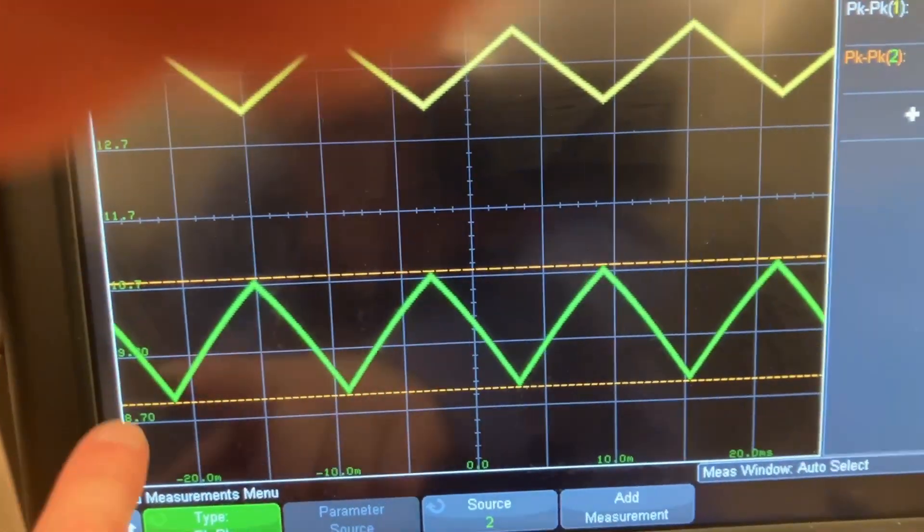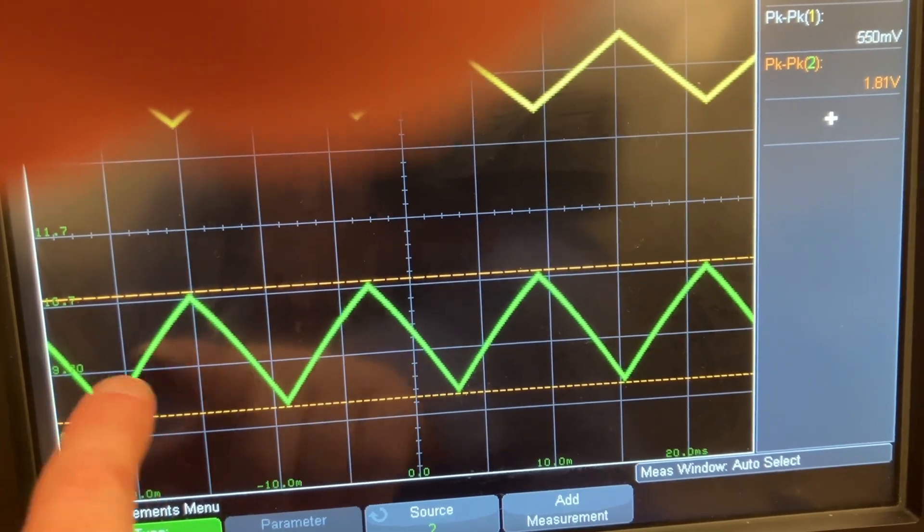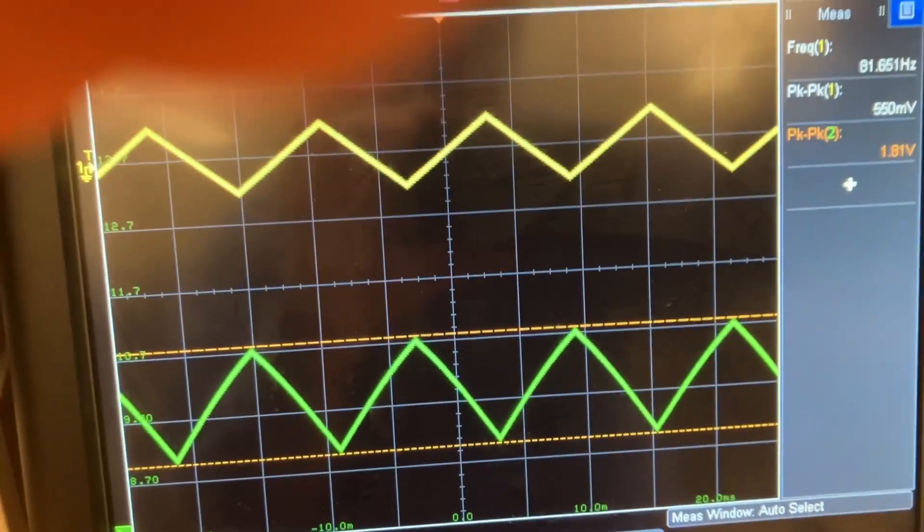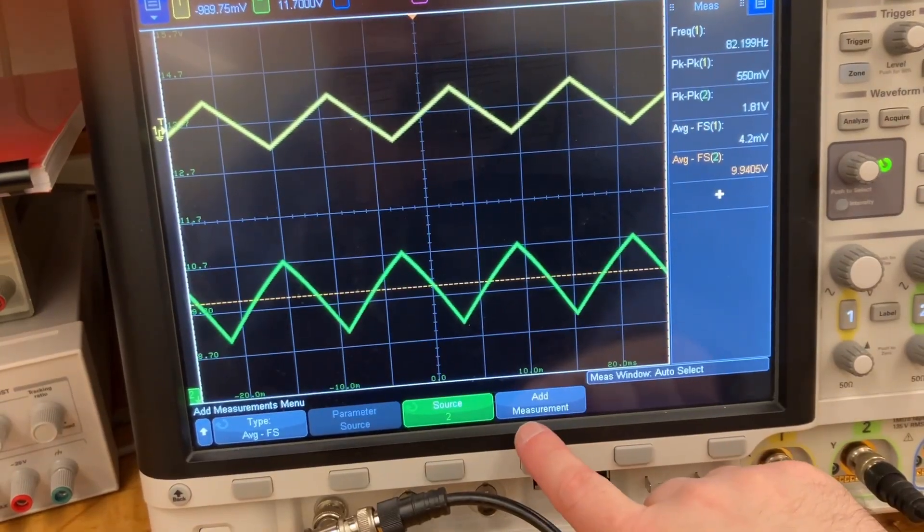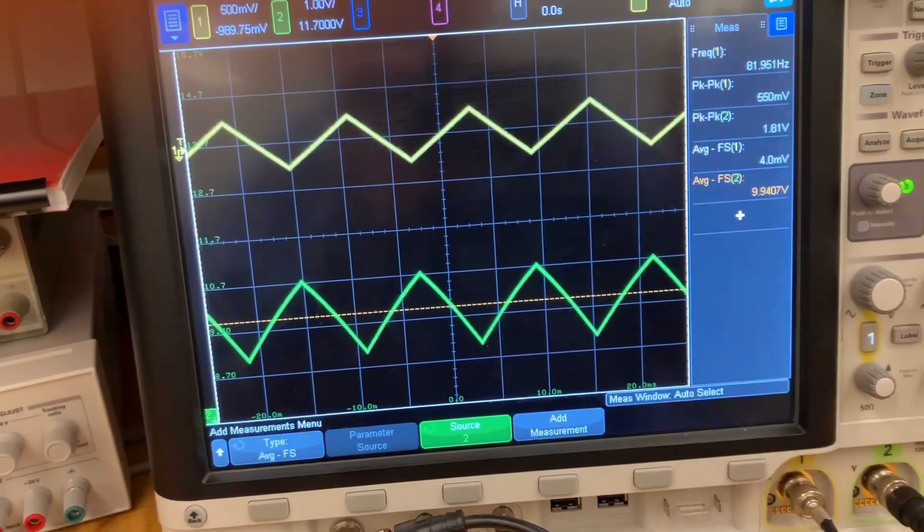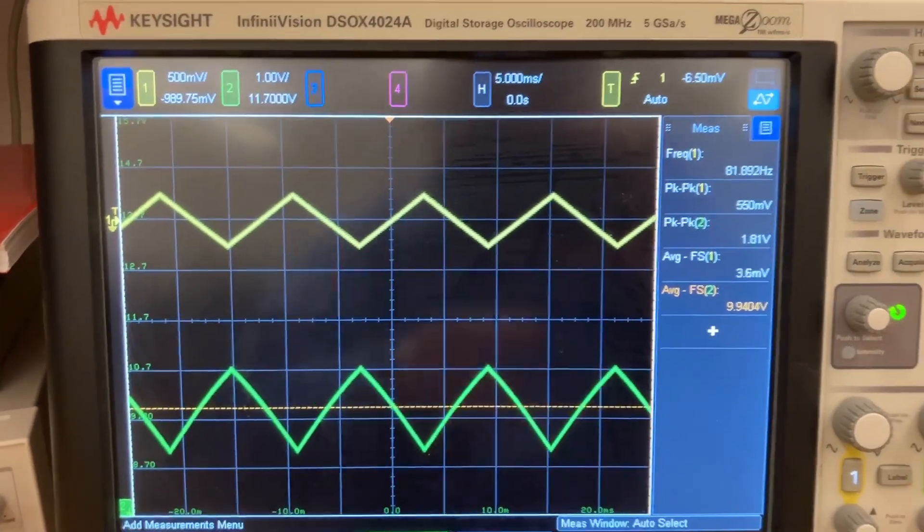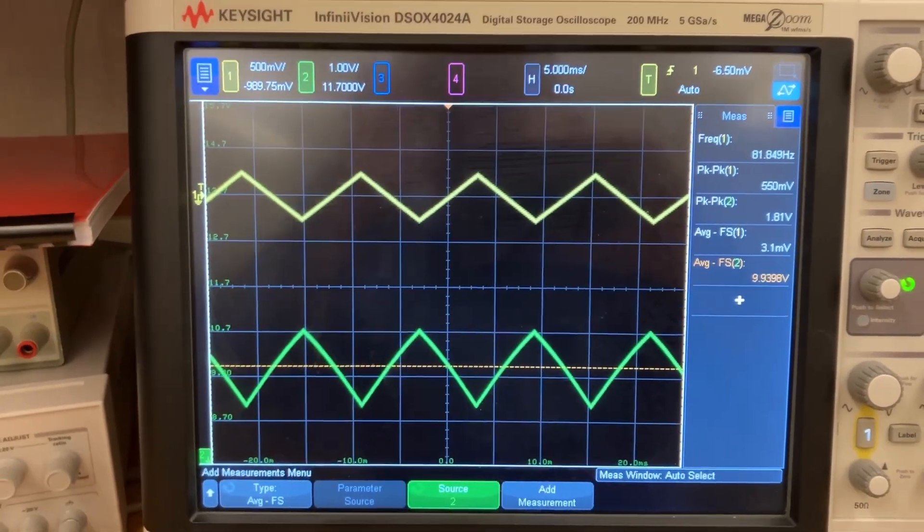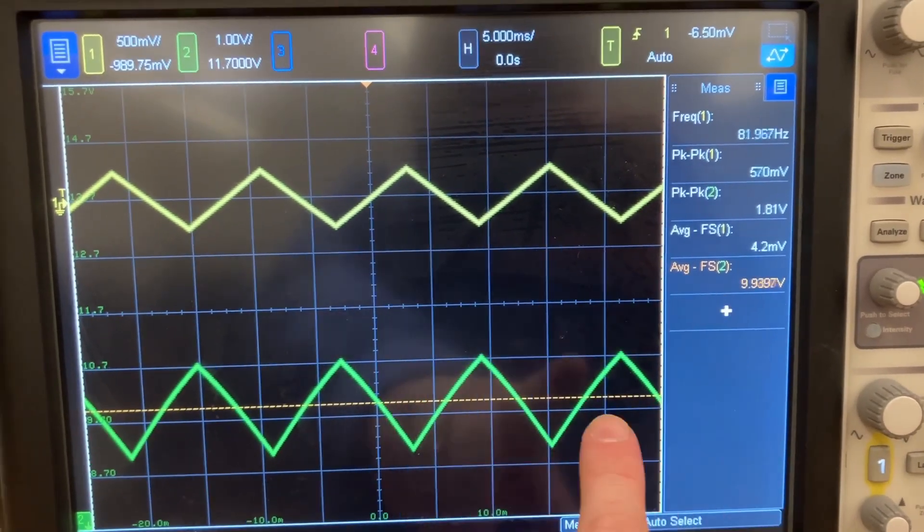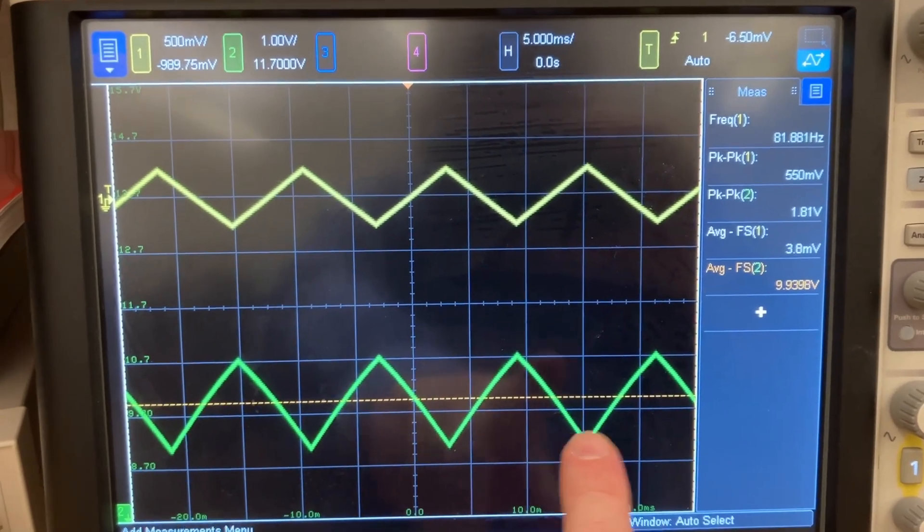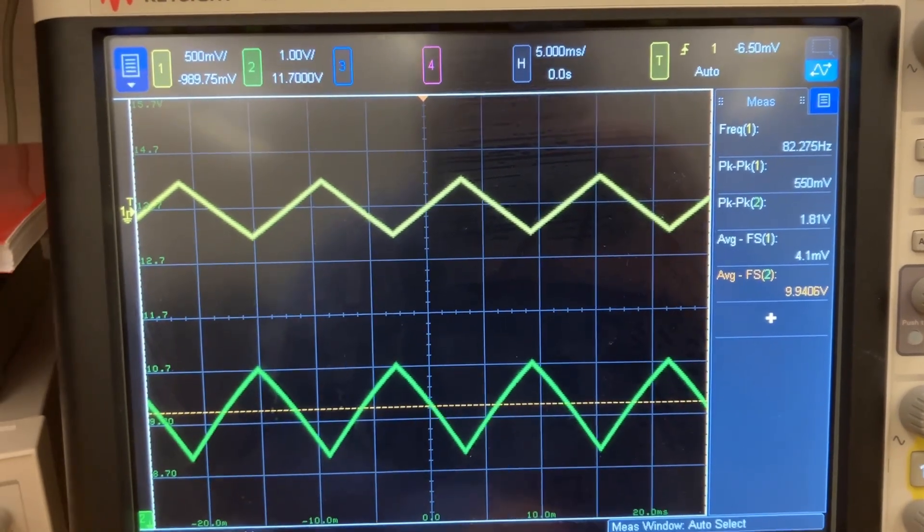You can see we're at a bias point of around 9-something, 10-something volts. Let me see if I can figure that out. How do I compute averages here? Measurement, add measurement. There we go. It's hard to hold the phone and think at the same time. Our DC bias on the plate is a little bit less than 10 volts.